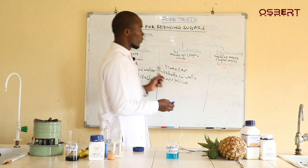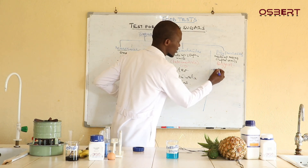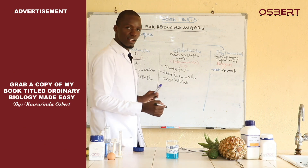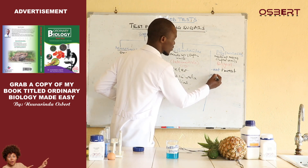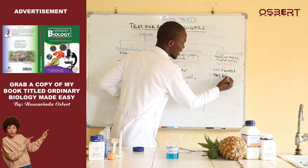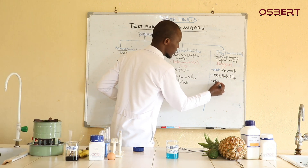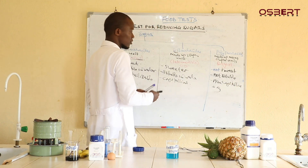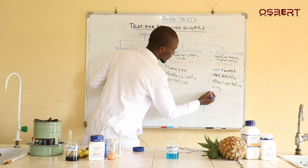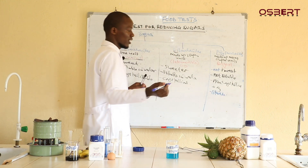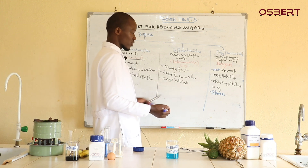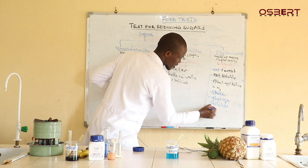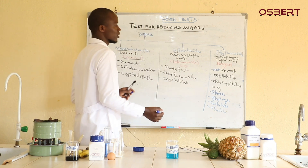For polysaccharides, all the characteristics are the opposite. These ones are not sweet — don't say they are bitter, they are simply not sweet. They are insoluble, and they are non-crystalline. Examples of polysaccharides include starch — the food stored by plants — glycogen, cellulose, and chitin. All of these are carbohydrates which are polysaccharides.